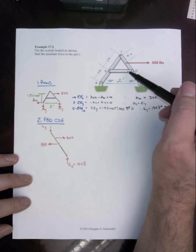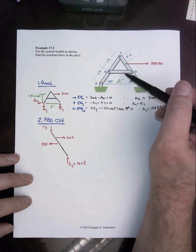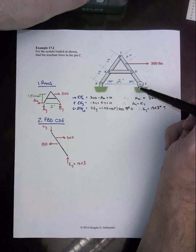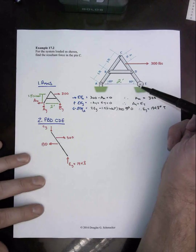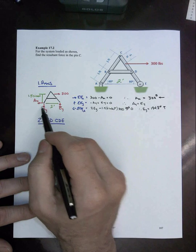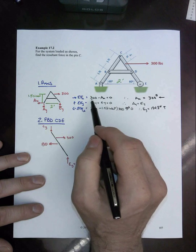BD is the only truss-like member or two-force member in the entire system. Pin at A, roller at E. So first thing, let's go find reactions: AX, AY over here at the left, EY over at the roller.